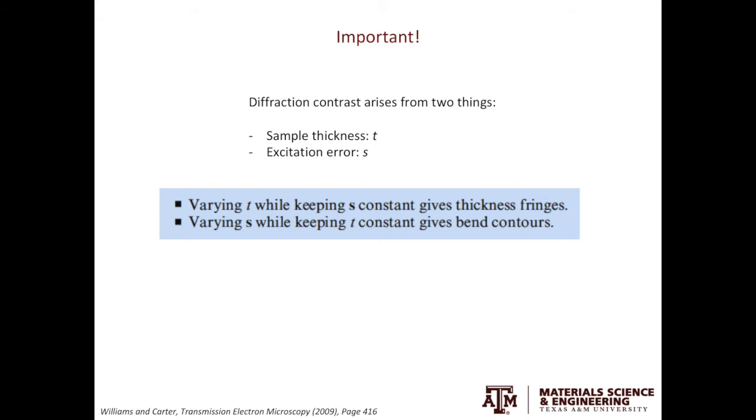If you vary the sample thickness while keeping the excitation error constant, it will give you the thickness fringes. If you change the excitation error while keeping the sample thickness constant, you will get bending contours. Therefore, there is a strong connection between the thickness fringes and the bending contours.